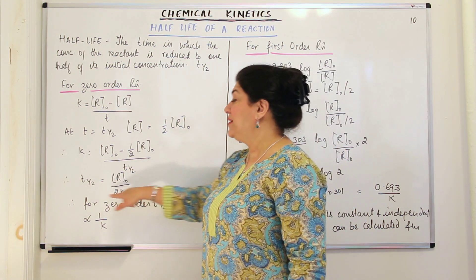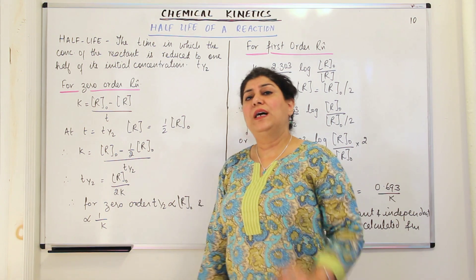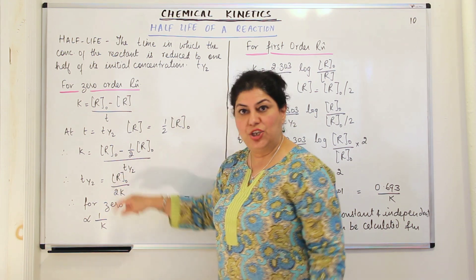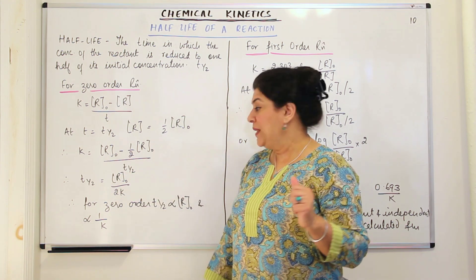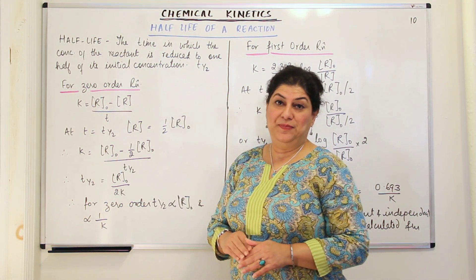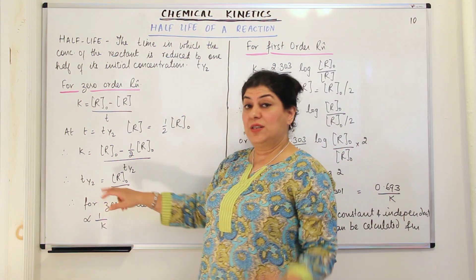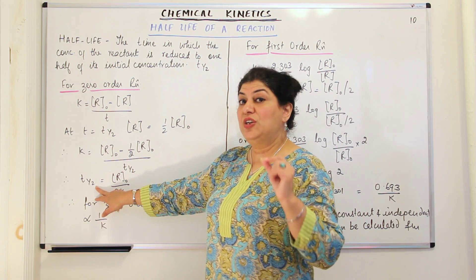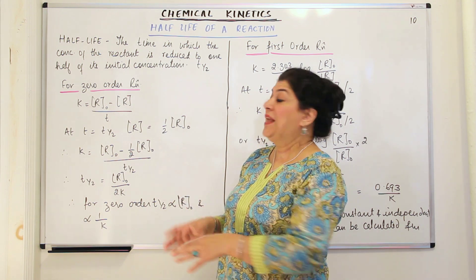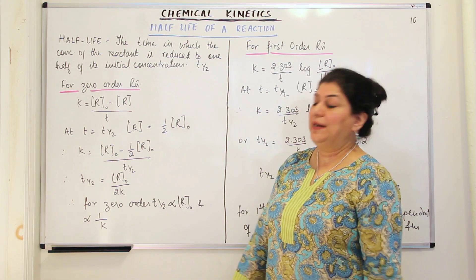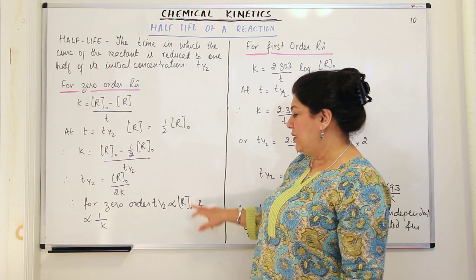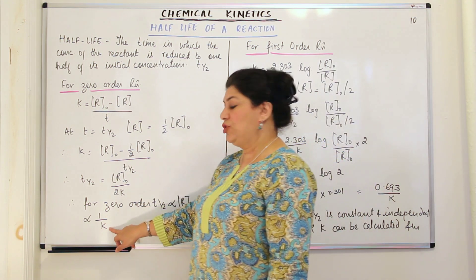So T½ = R0/2K is the half-life period of a zero-order reaction. The half-life period is directly proportional to the initial concentration of the reactant and inversely proportional to the rate constant K. So for a zero-order reaction, T½ is directly proportional to R0 and inversely proportional to K.